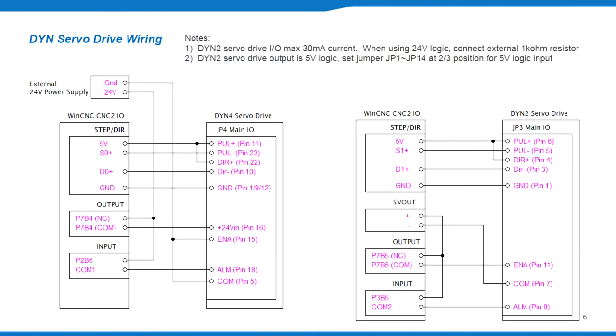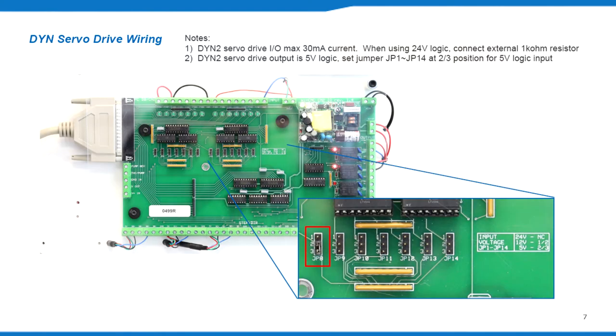Wire the DYN2 or DYN4 servo drives into the CN2IO board as follows. When using the DYN2 servo drive, the drive's IO logic is 5V, so insert the input jumpers on the CN2IO board at 23 position to match the 5V level.